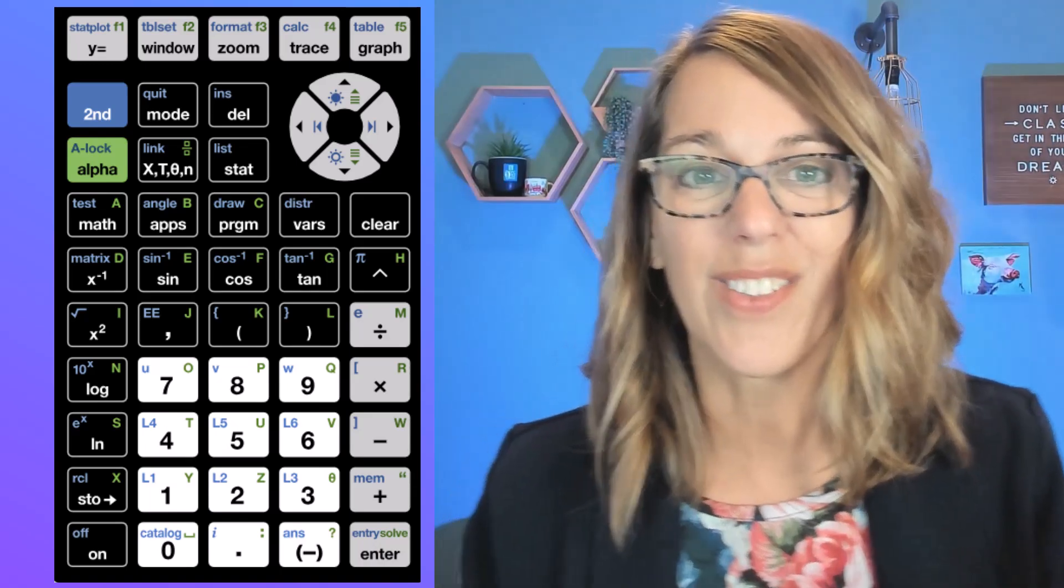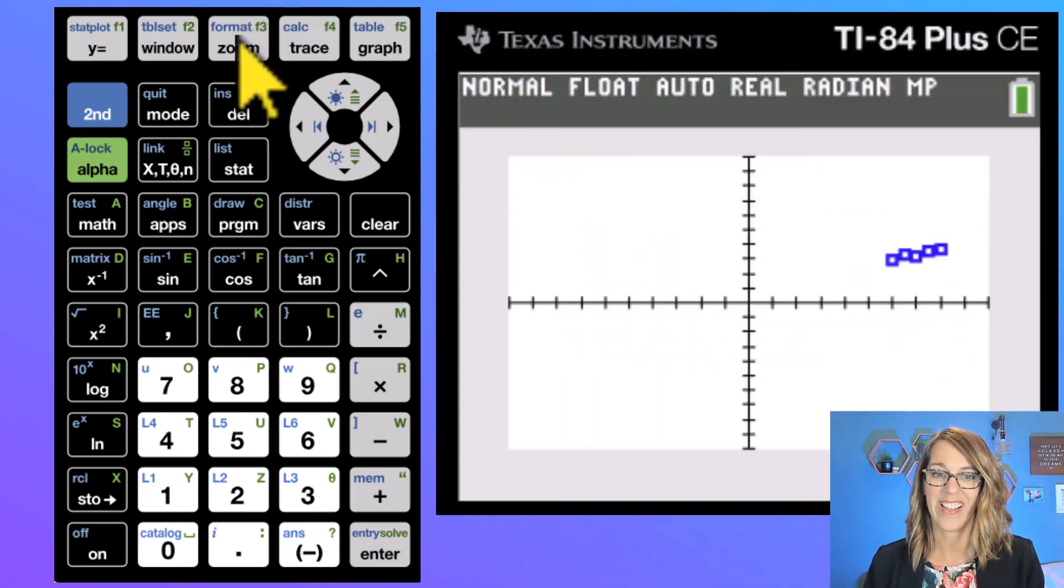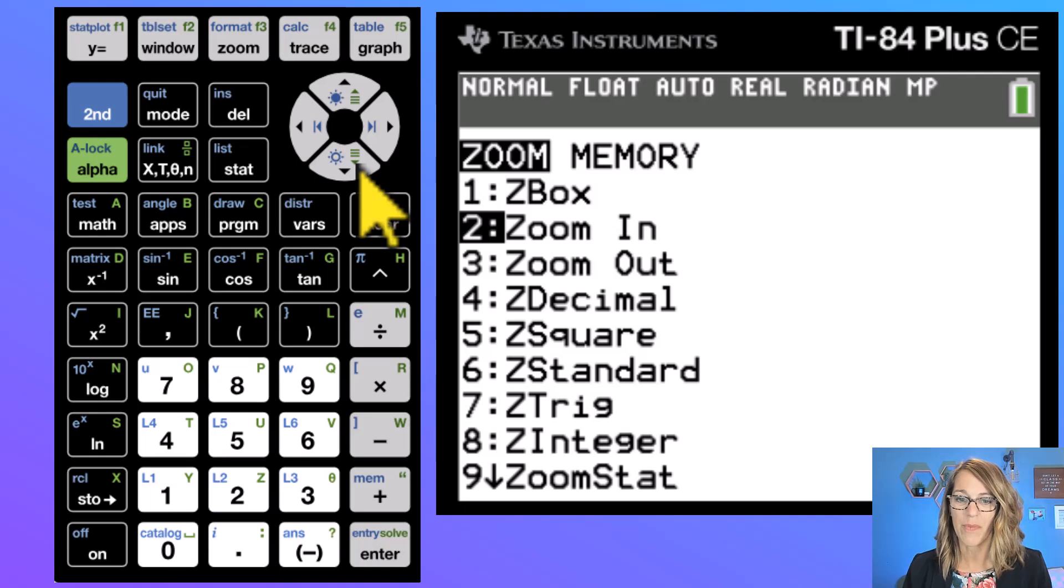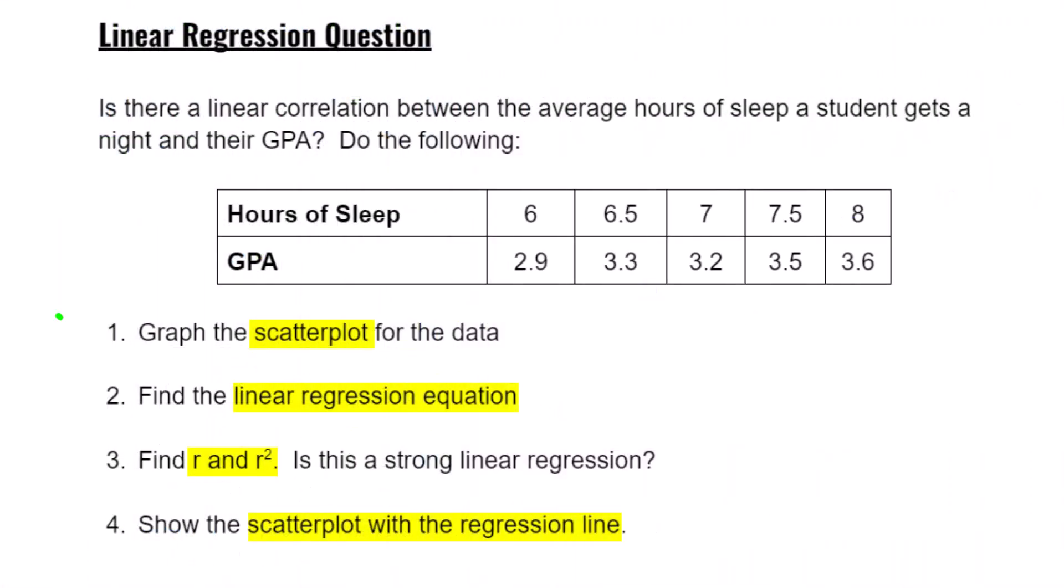The TI-84 has a great zoom feature called zoom stat. It'll zoom in right on your data. So I hit my zoom button here in the middle and I'm going to arrow down or you can hit number nine to choose zoom stat, and I've got a really nice picture of my scatter plot. Okay, task number one done.